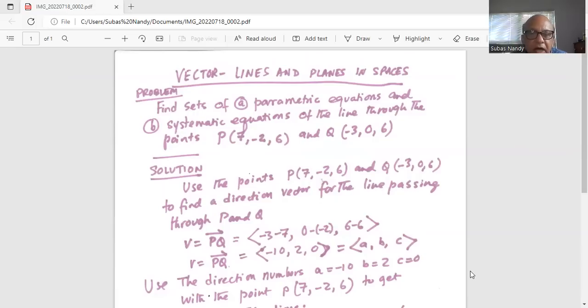which will be x2 minus x1. So minus 3 minus 7, y2 minus y1, so 0 minus minus 2, and 6 minus 6. Hence vector PQ is minus 10, then 0 plus 2 is 2, and then 0.